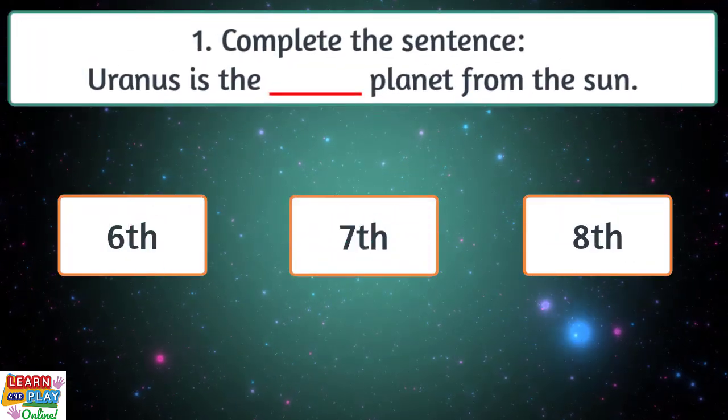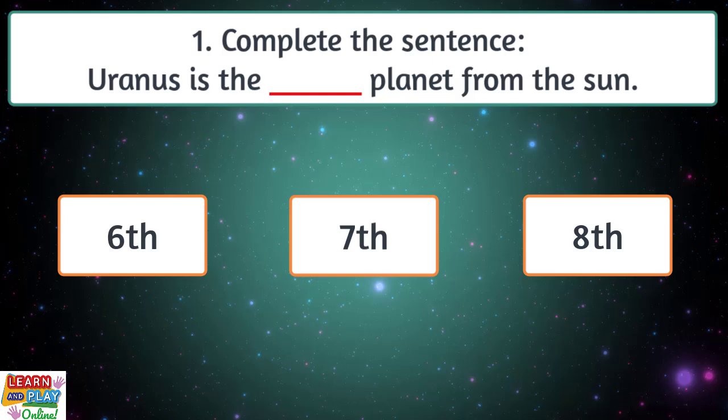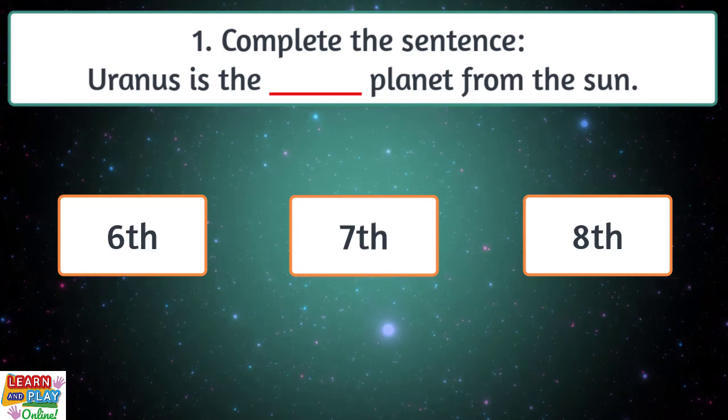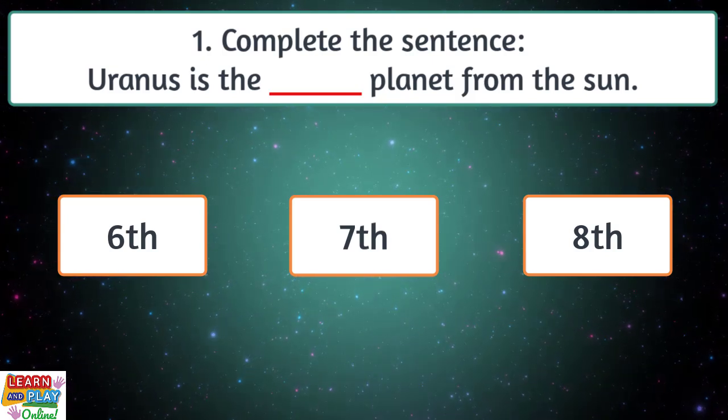Question 1. Complete the sentence. Uranus is the planet from the sun. Is it 6th, 7th or 8th?